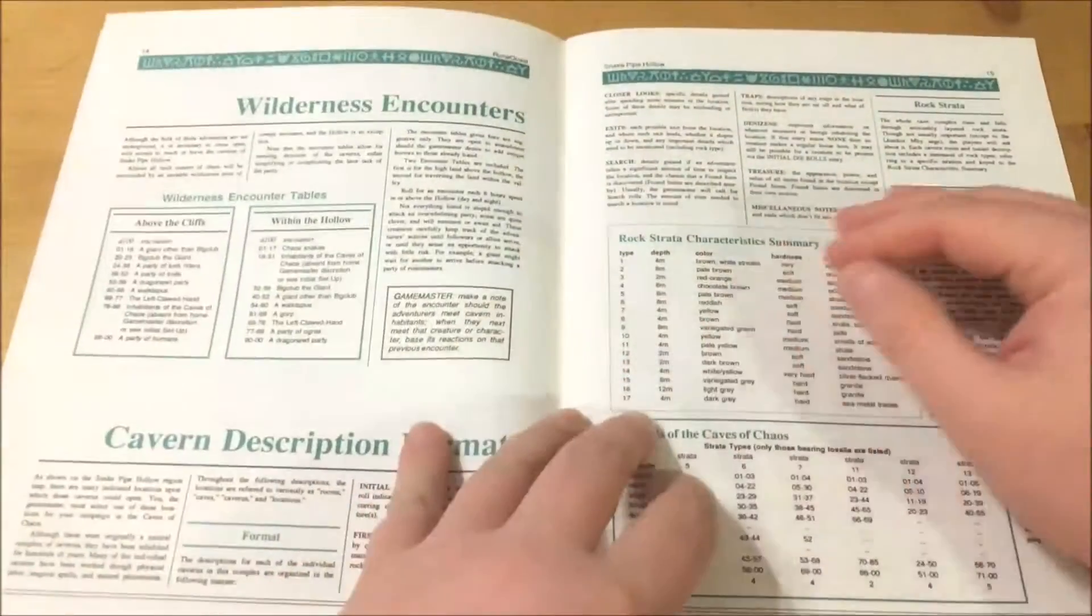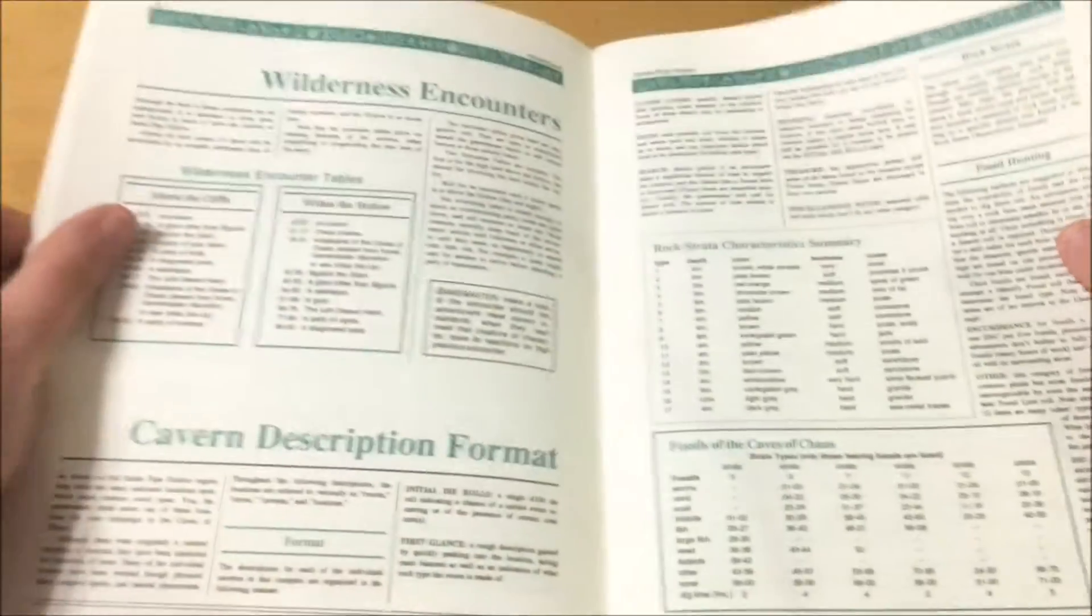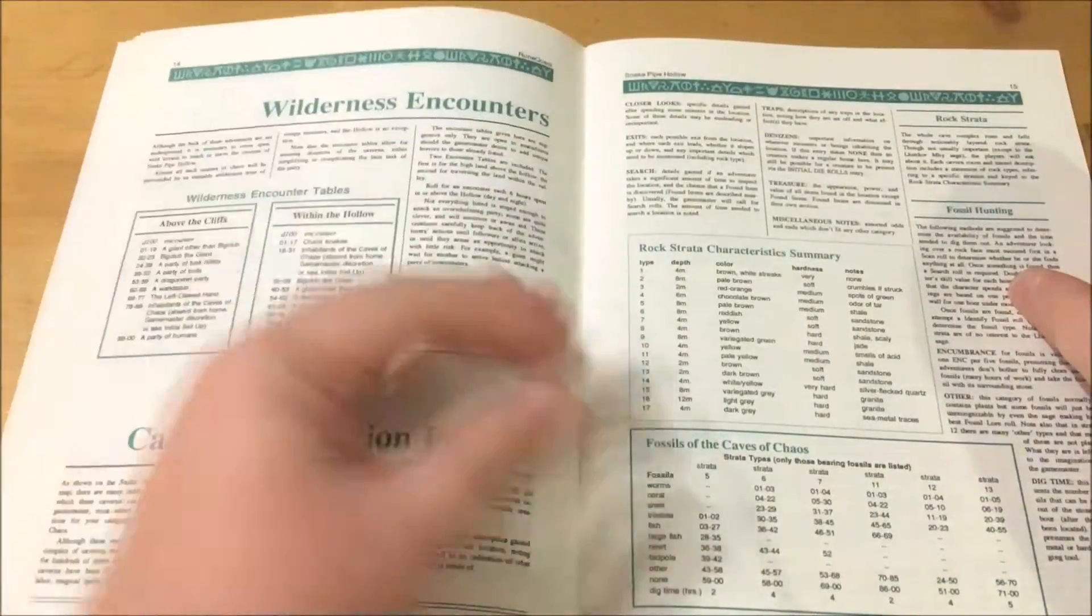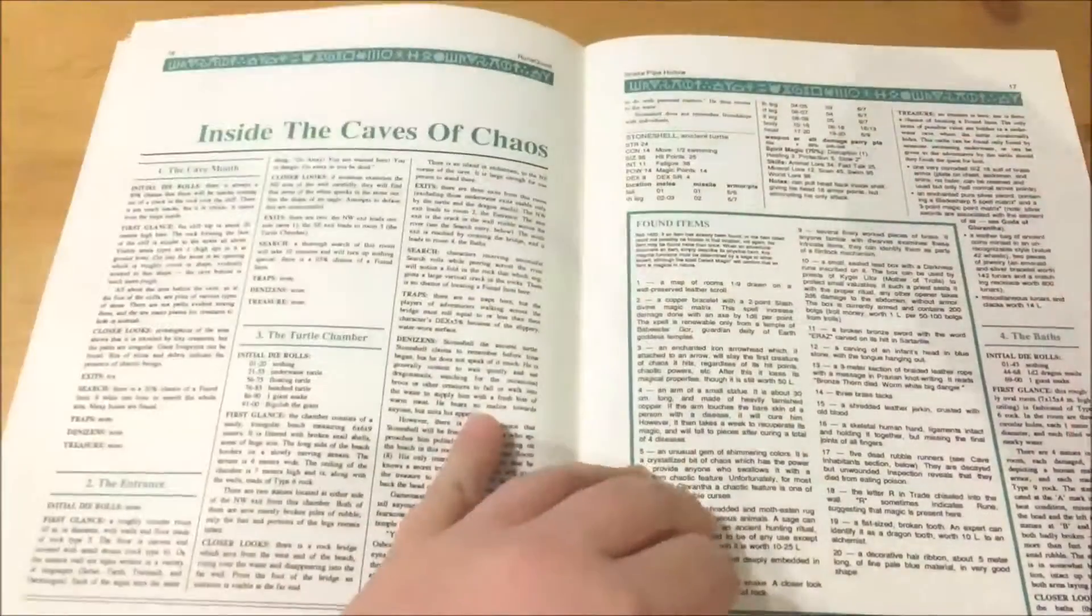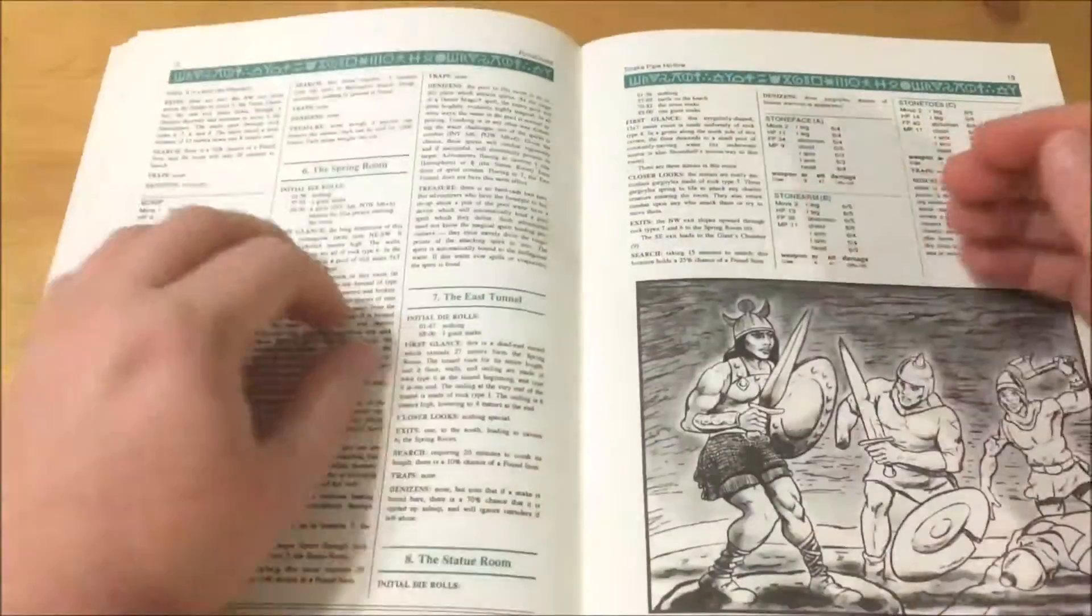The scenario itself starts with descriptions of the various rock and fossil formations that are presented throughout the hollow. What then follows is the bulk of the Caves of Chaos and the denizens that lie within. Broadly speaking, Snake Pipe Hollow can be grouped into three areas.